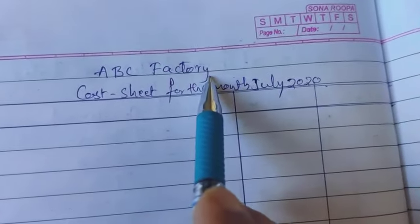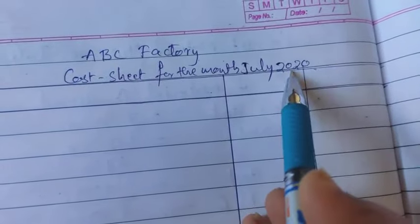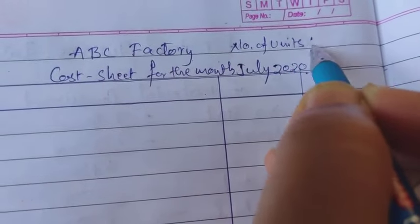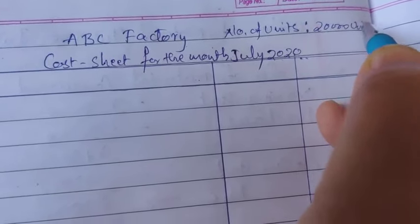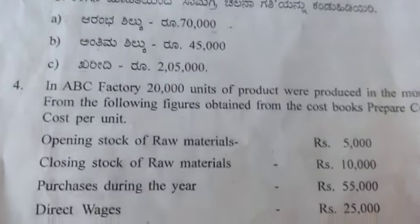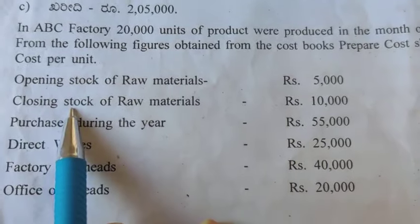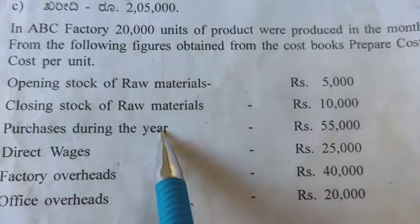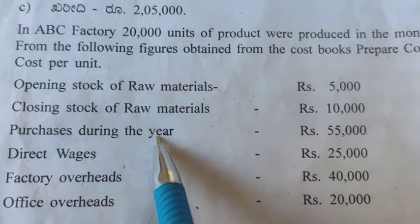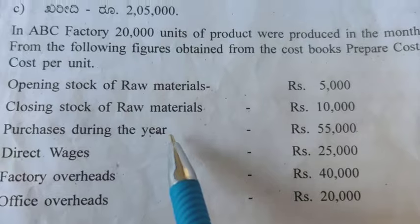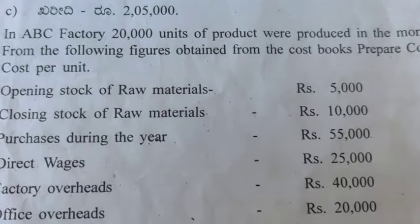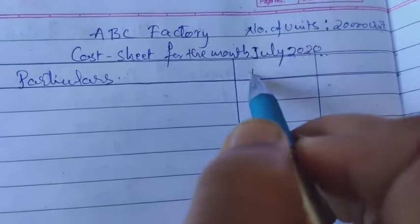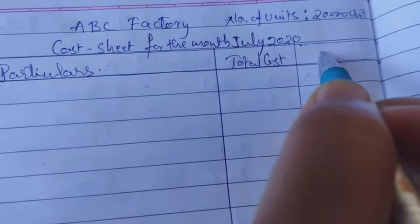The cost sheet is for ABC factory and for the month of July 2020. Number of units produced are 20,000 units. Opening stock of raw material is given, closing stock of raw material is also given, and purchases during the year is also there. Here is the cost sheet with a particulars column, total cost column, and cost per unit column.